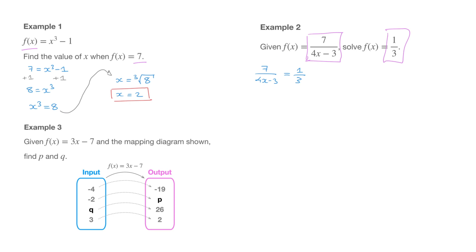To solve this equation for x, the first thing we need to do is get this x away from the denominator, and for that we can use cross multiplication. We're going to multiply the numerator by the entire expression 4x minus 3 times 1, and multiply the 7 by the 3 in the other denominator. Taking care of that cross multiplication leads to 7 times 3 equals 1 times the quantity 4x minus 3, which gives us 21 equals 4x minus 3.